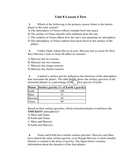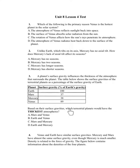Number 3. A planet's surface gravity influences the thickness of the atmosphere that surrounds the planet. The table below shows the surface gravities of the terrestrial planets as a percentage of the surface gravity of Earth: Earth 100%, Mars 37%, Mercury 38%, Venus 89%. Based on their surface gravities, which terrestrial planets would have the thickest atmospheres? A. Mars and Venus. B. Earth and Venus. C. Earth and Mercury.